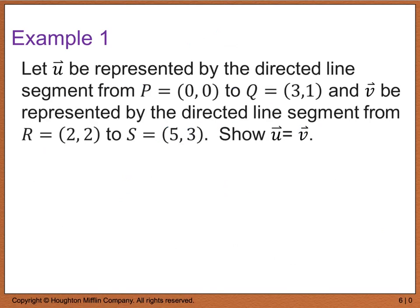Example 1 says to let vector U be represented by the directed line segment from point P at (0, 0) to point Q at (3, 1), and let vector V be represented by the directed line segment from R at (2, 2) to S at (5, 3). We want to show that vector U equals vector V.